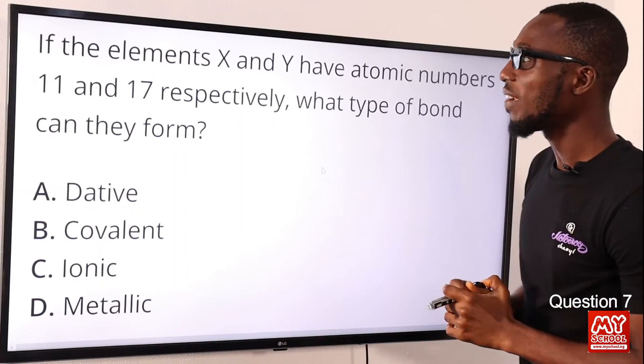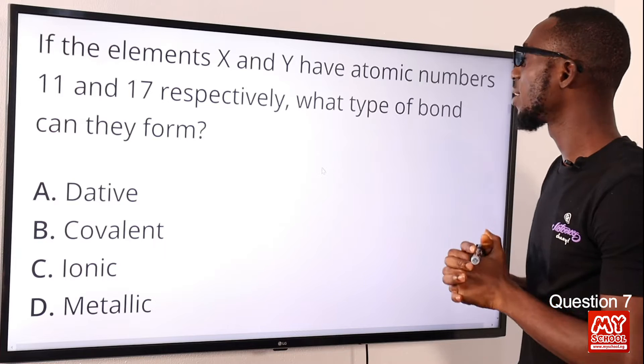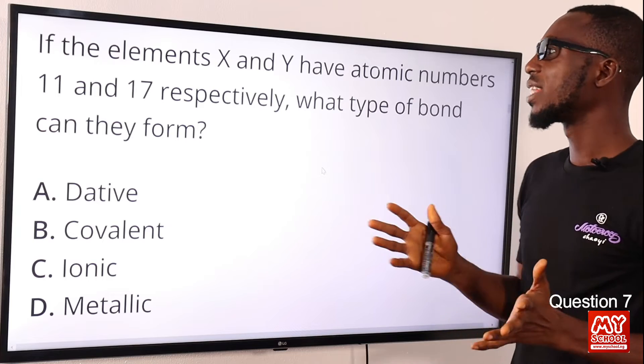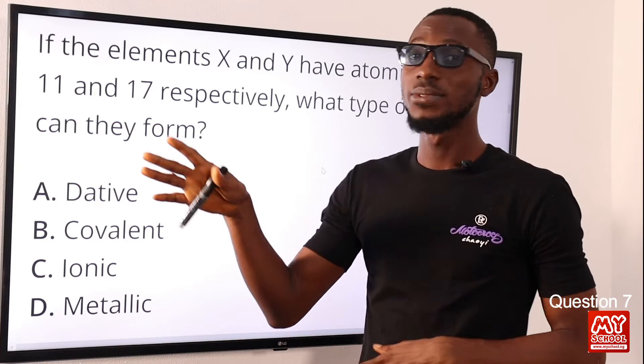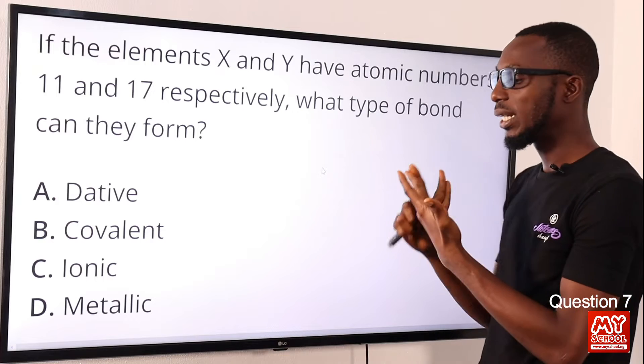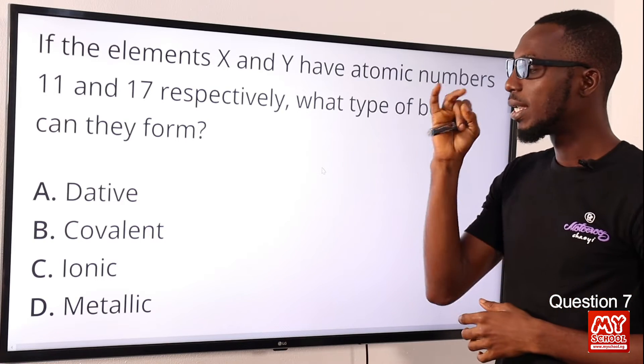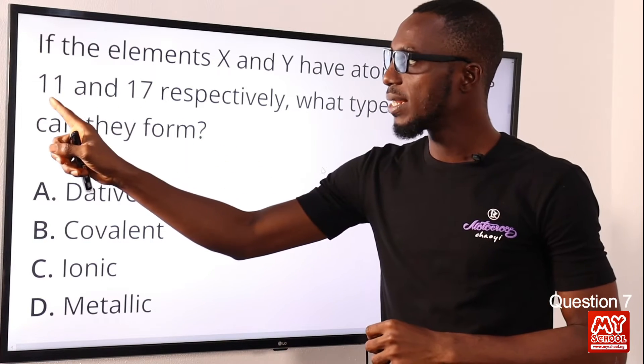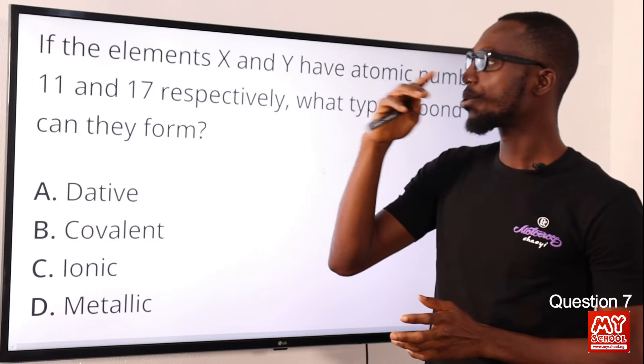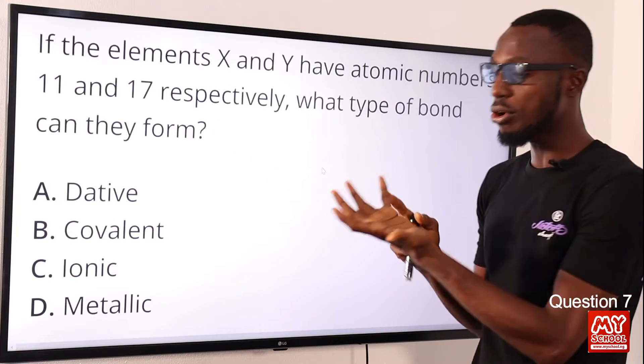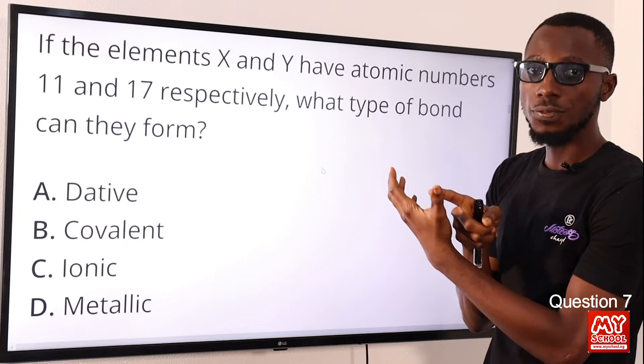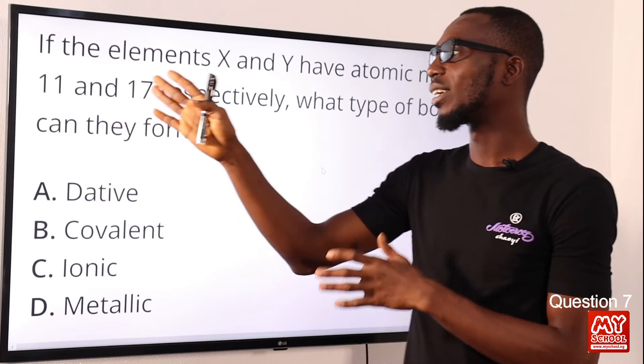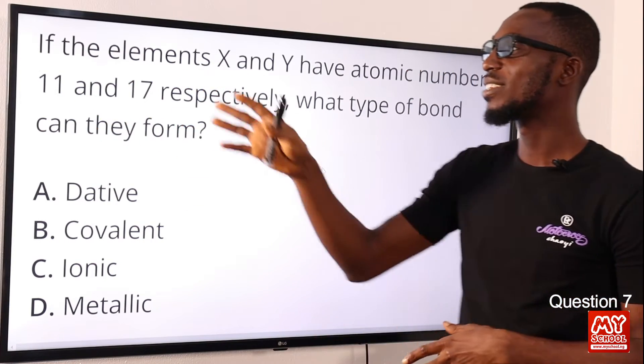Question 7: If the element X and Y have atomic numbers 11 and 17 respectively, what type of bond can they form? Let's count: hydrogen, helium, lithium, beryllium, boron, carbon, nitrogen, oxygen, fluorine, neon, sodium. Element 11 is sodium. Let's go to element 17: sodium, magnesium, aluminum, silicon, phosphorus, sulfur, chlorine.